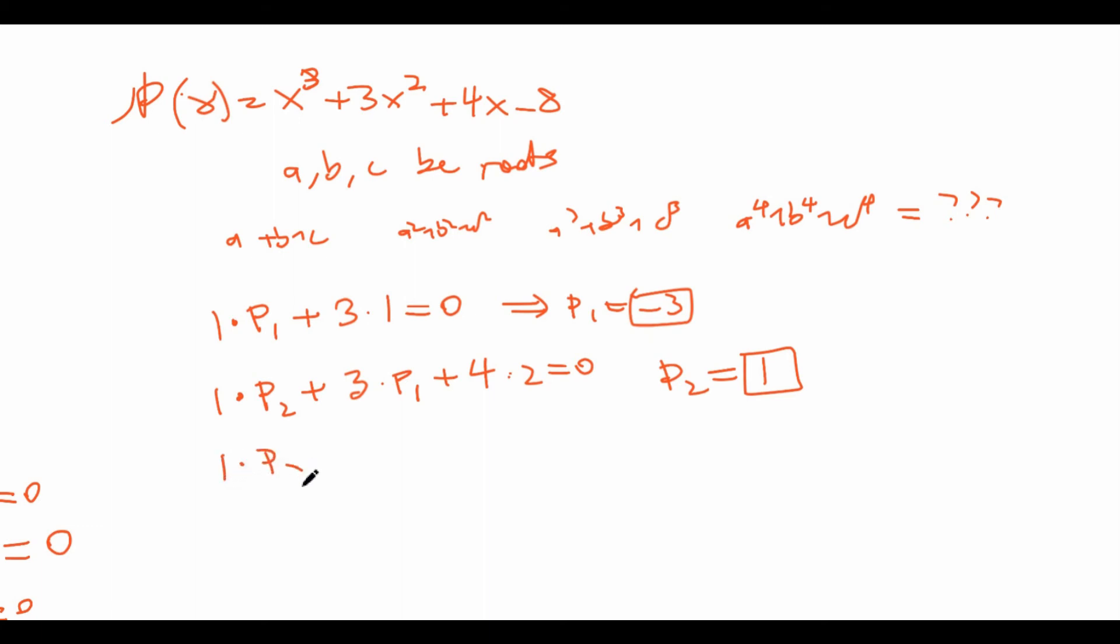So now we have our next answer, let's continue. Keep on going, write down the formulas: 1*P_3 plus 3*P_2 plus 4*P_1 minus 8 times 3 equals 0. Well we know that P_1 is negative 3, which means that when we move it over we get 12. We know that P_2 is 1, so we move it over we get negative 3, so 12 minus 3 is equal to 9. Finally we have negative 8 times 3 which is negative 24, so when we move it over we get 9 plus 24 which is equal to 33. So this means that P_3 is equal to 33.